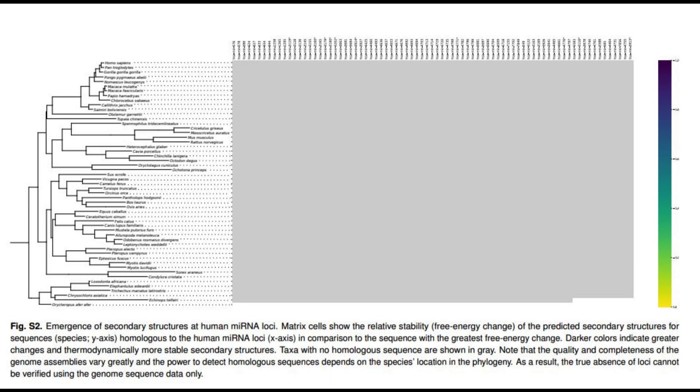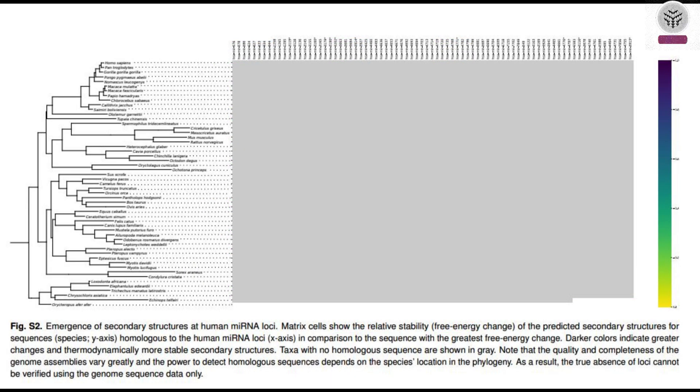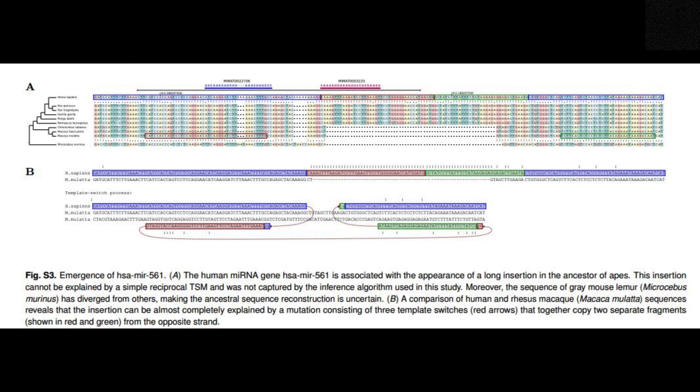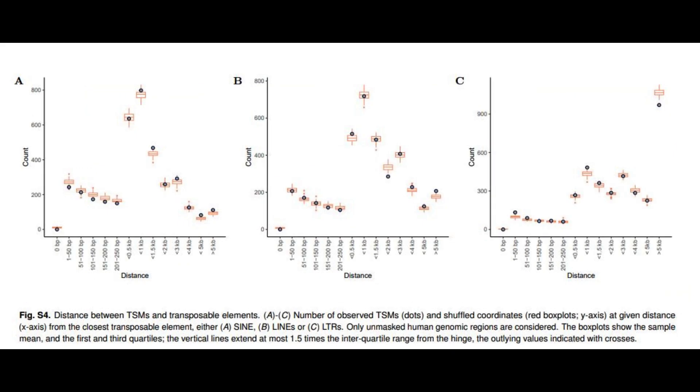Researchers decided to concentrate on microRNA genes because of their straightforward structure. These genes are extremely brief, consisting of only a few tens of bases, and they must adopt a hairpin structure to perform their intended function.